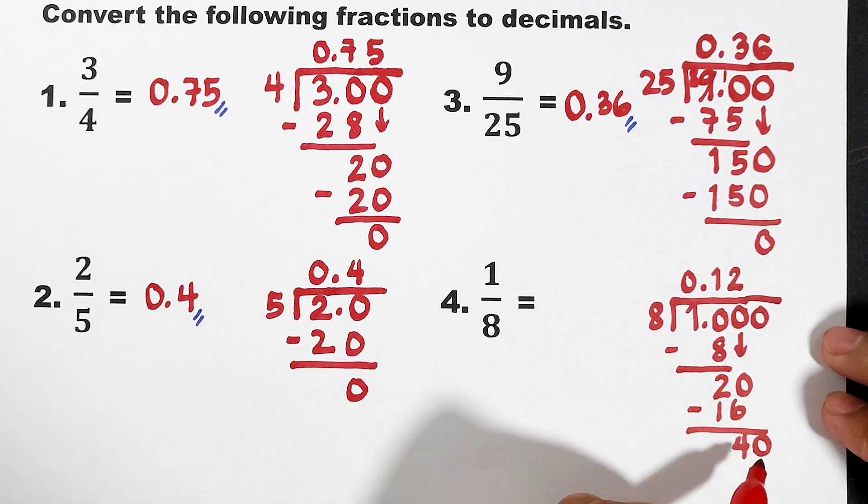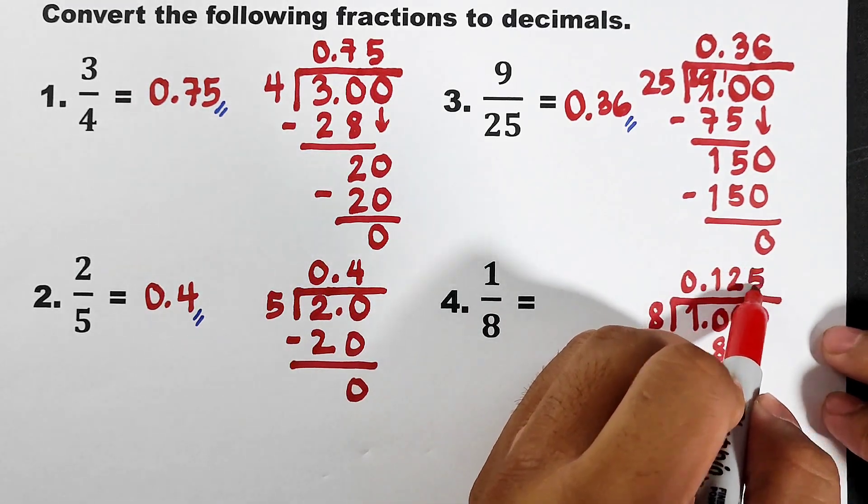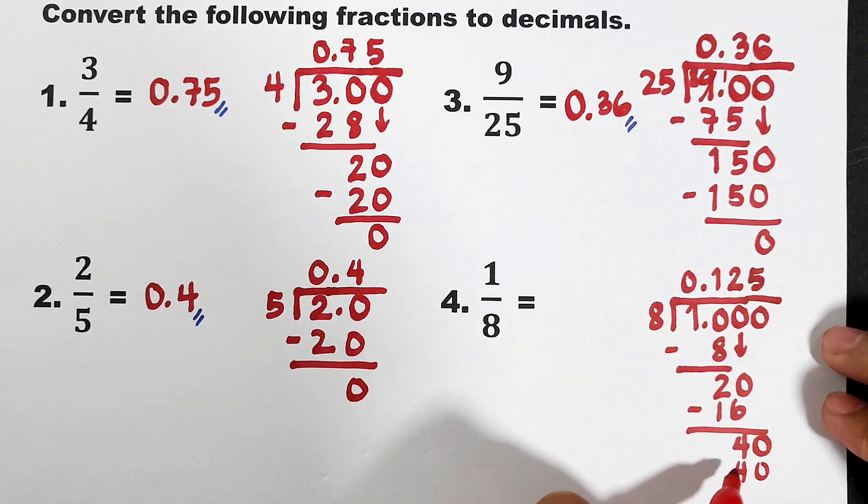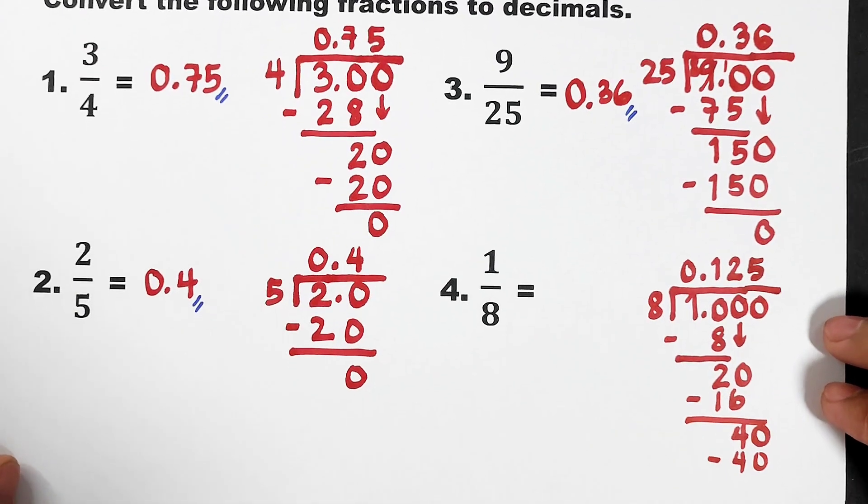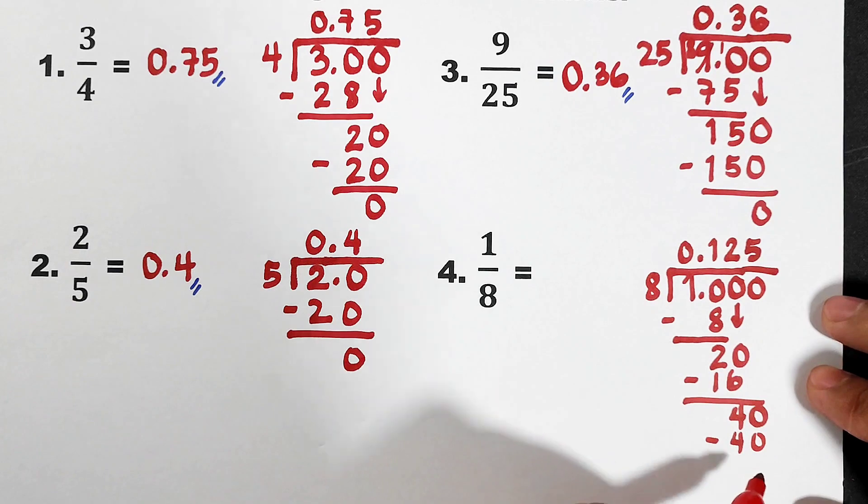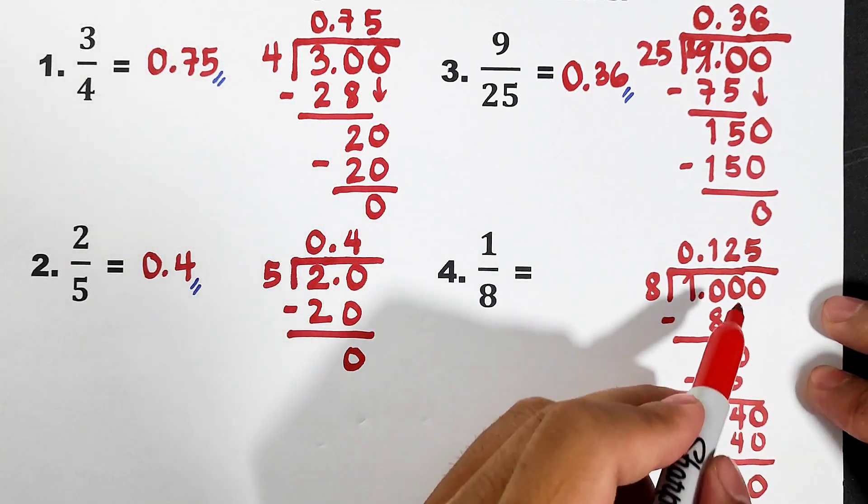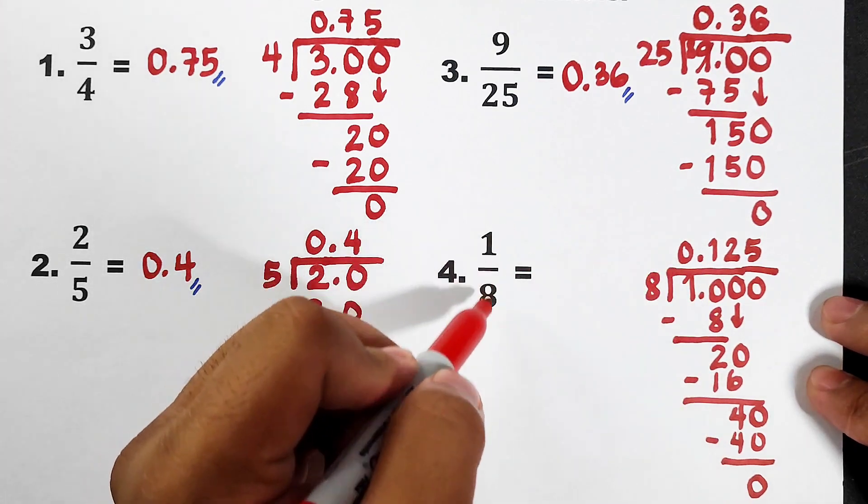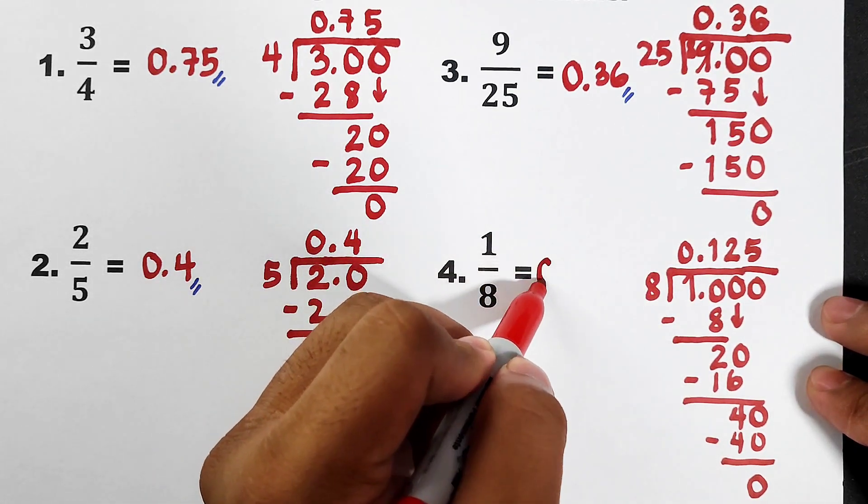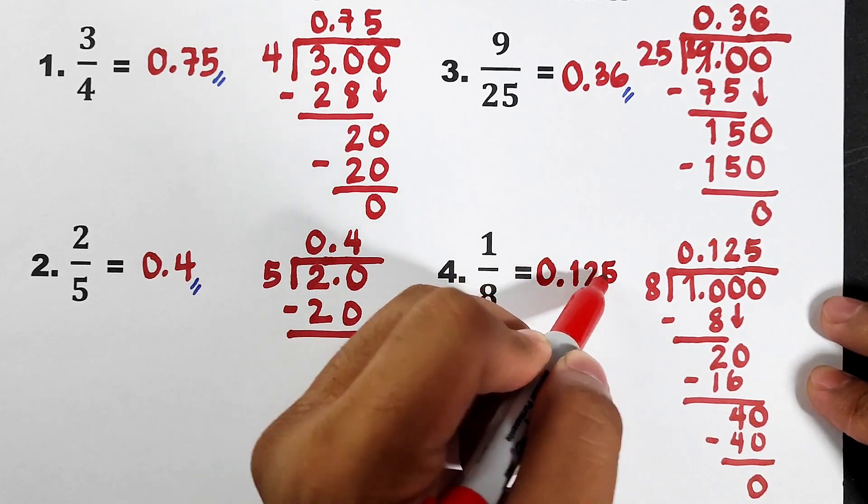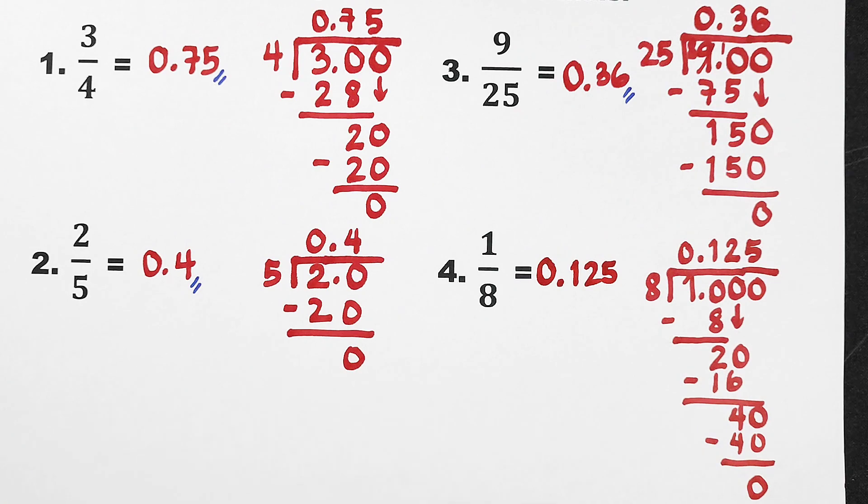So, what we have now is 40 divided by 8. That is equal to 5. 5 times 8 is 40. And as you can see, when we subtract this one, it will give us the answer of 0. Meaning, this decimal at the top is the converted form of 1 over 8 into decimal form. We have 0.125. That is the answer for number 4.